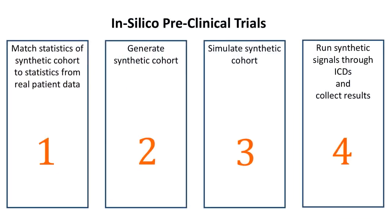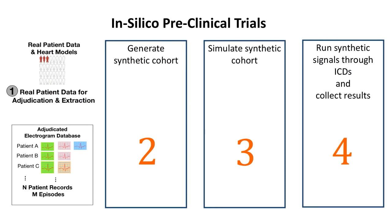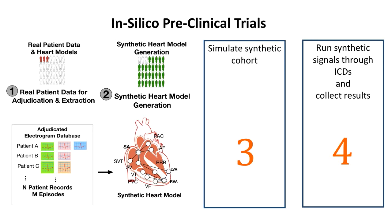An in-silico preclinical trial proceeds in four steps. First, we obtain the distributions for key model parameters from real patient data. This way, the results of our synthetic trial approximate the results that would be obtained from a real clinical trial on those real patients. For each patient in our database, we calculate the values of key parameters. We will use these parameter values when generating the synthetic group of patients. By fitting a distribution to the extracted parameter values, we can sample the distribution and generate synthetic patients.